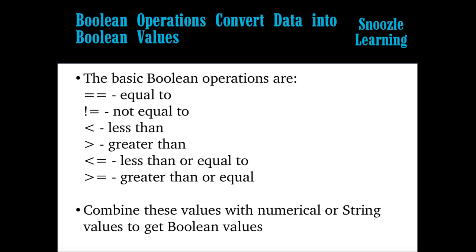There are a few Boolean operators. We have equals-equals, which means if two numbers are equal the statement is true and returns a true value. The exclamation-point-equals means if these two things are not equal. The left angle bracket is less-than, right angle bracket is greater-than, and left-angle-bracket-equals is less-than-or-equal-to. If the two things on the left and right meet these conditions, the statement becomes true.